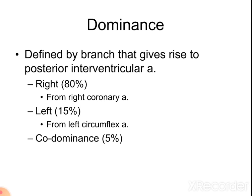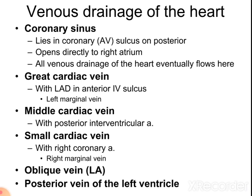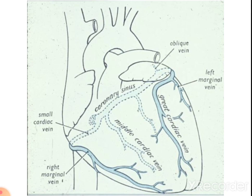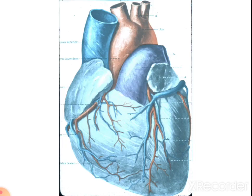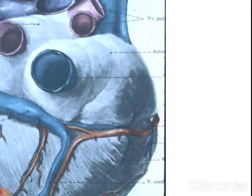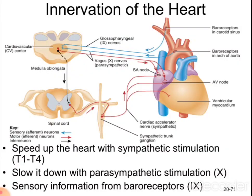In the venous drainage of the heart, the veins draining blood from the wall of the heart include: the coronary sinus, which is the largest vein; the great cardiac vein, middle cardiac vein, small cardiac vein, oblique vein of the left atrium, and posterior vein of the left ventricle, present on both anterior and posterior surfaces.